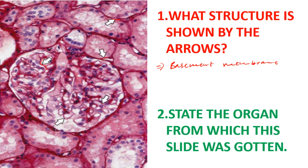The next question: state the organ from which this slide is gotten. If you look at this slide, it is likely to be that of the kidney. This whole structure here is the glomerulus. So this slide is simply that of the kidney. Make sure you take note of identifying features like the glomerulus.